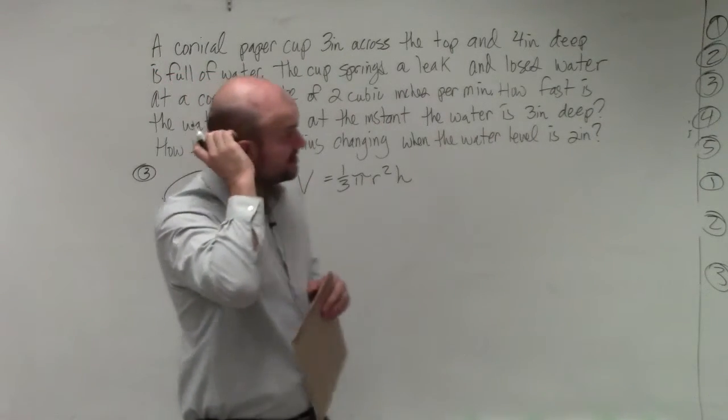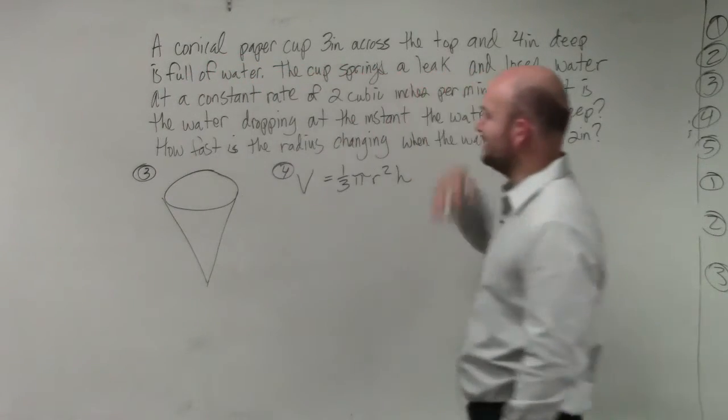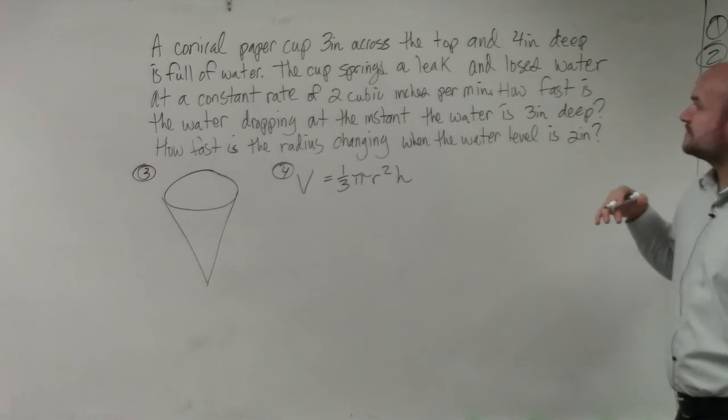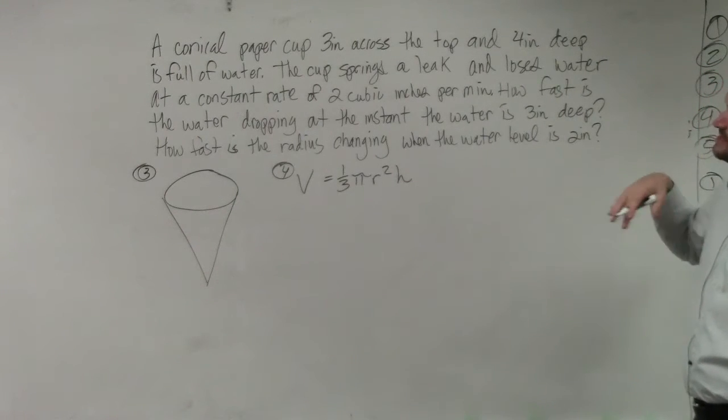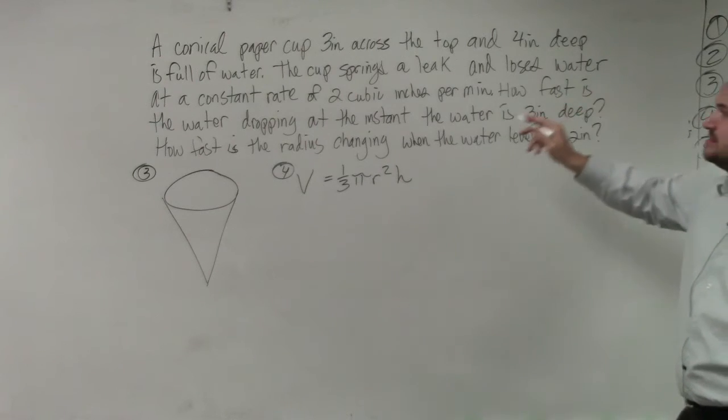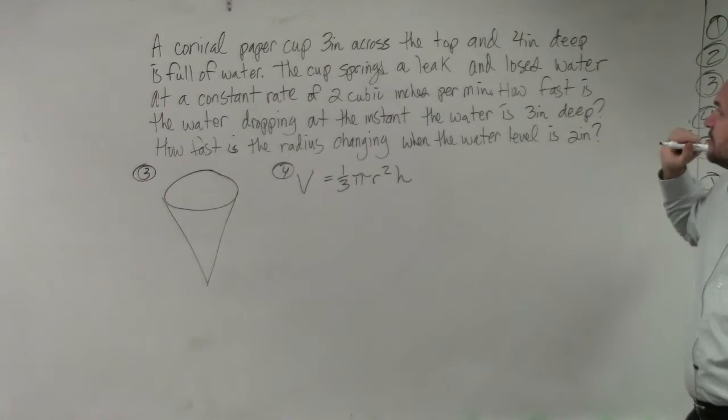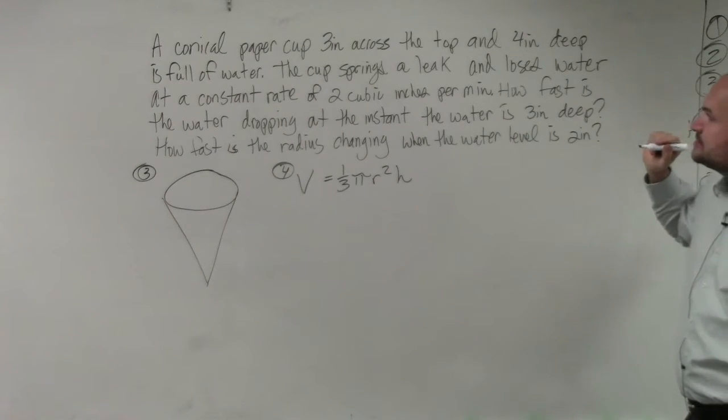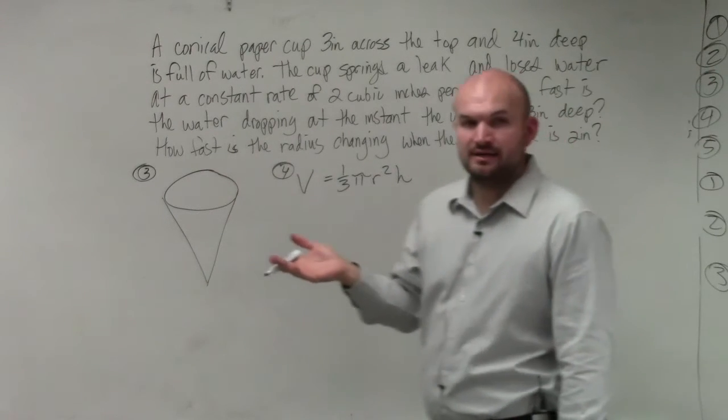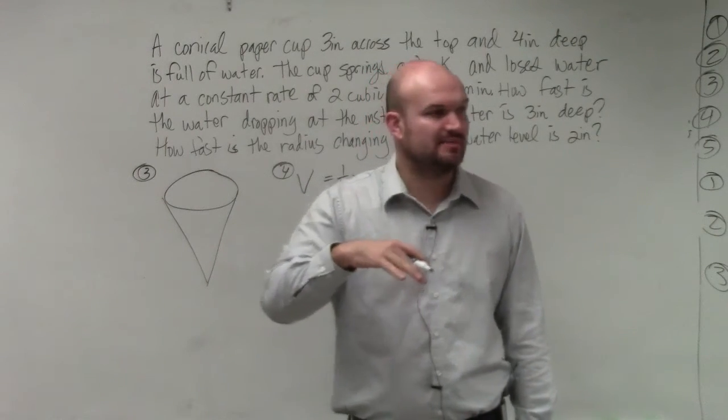Now, as far as defining our variables, there's a couple things that we need to look at and I'm going to skip over things and look at the question again, trying to see what we're trying to understand. It says, how fast is the water dropping? They're asking for a rate, right?